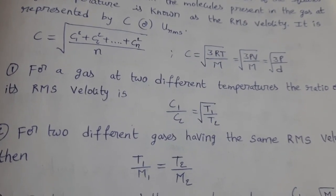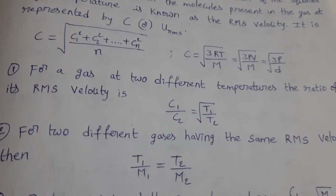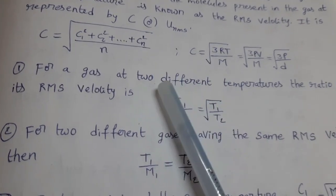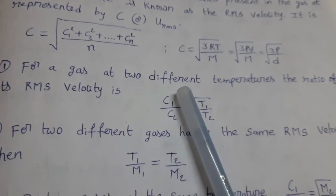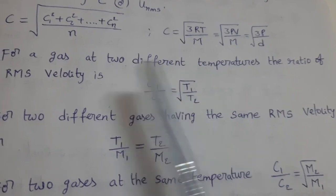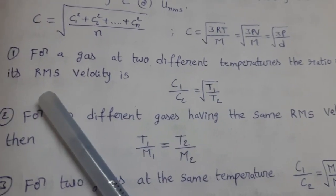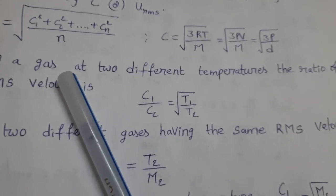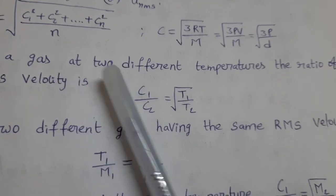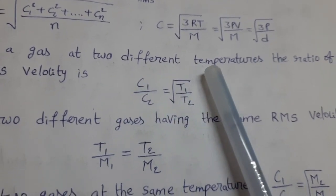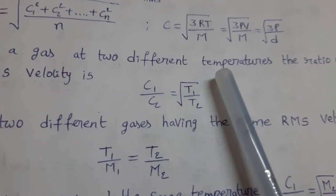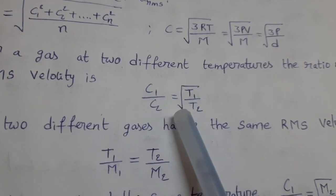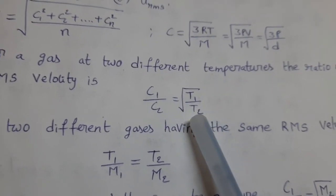See the different formulae which we use for numericals. For a particular gas at two different temperatures, the ratio of RMS velocity is C₁/C₂ = √(T₁/T₂).